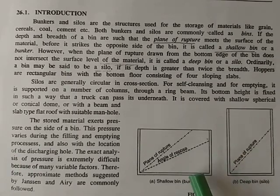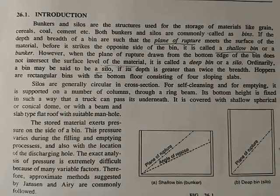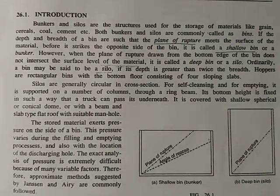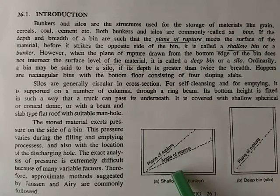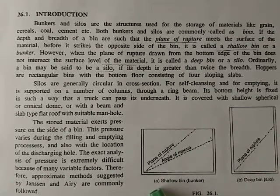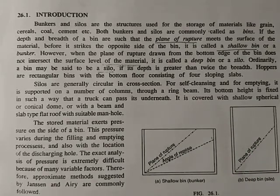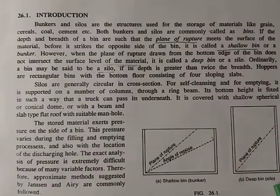Secondly, if the depth of the bin is less than twice the width, that structure is called a shallow bin. If the height is more than twice the width, it is defined as a silo. Another difference: when the load is taken up by the bottom of a shallow bin, it is a bunker; in silos, the load is taken up by friction between the walls and the materials. Shallow bins are called bunkers; deep bins are called silos.